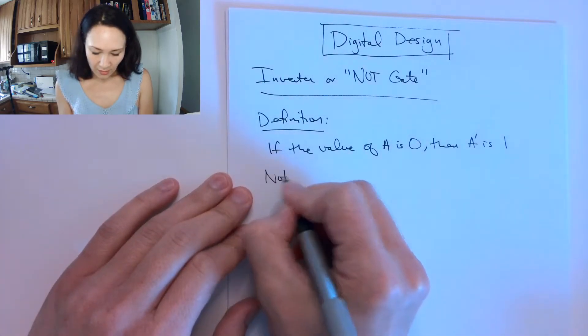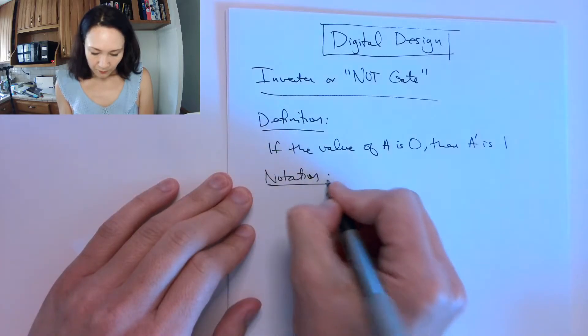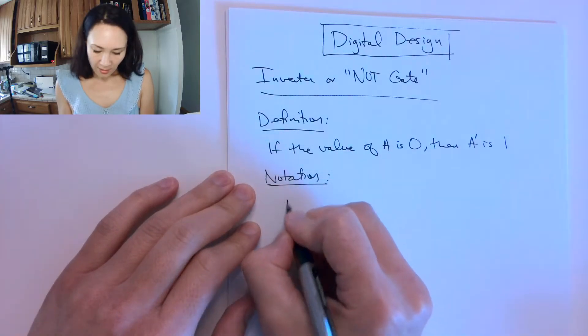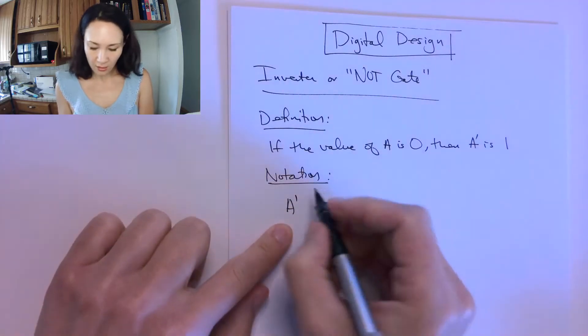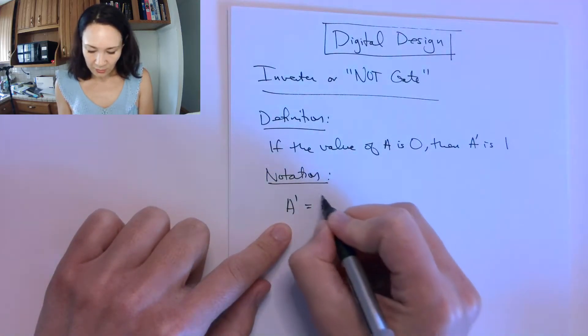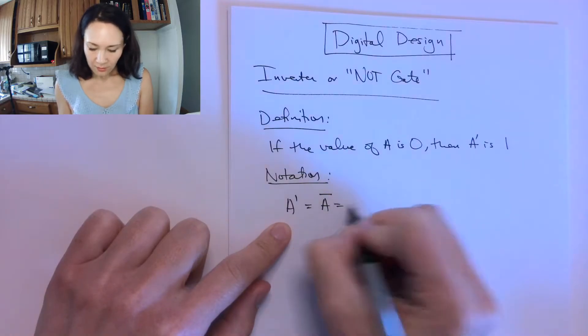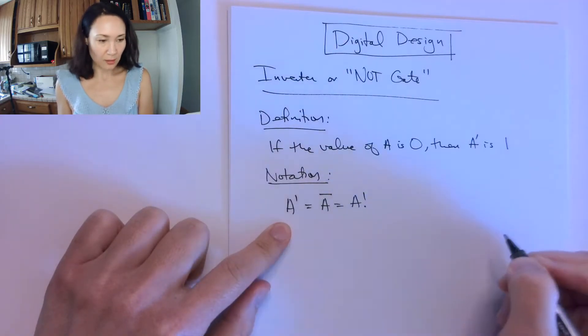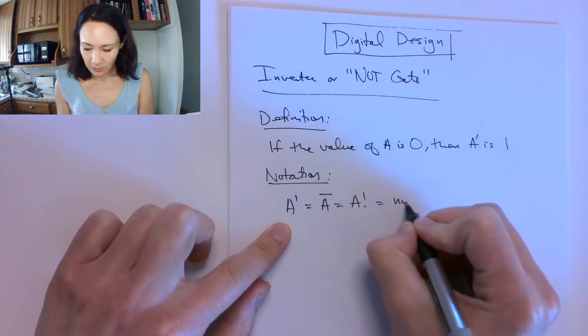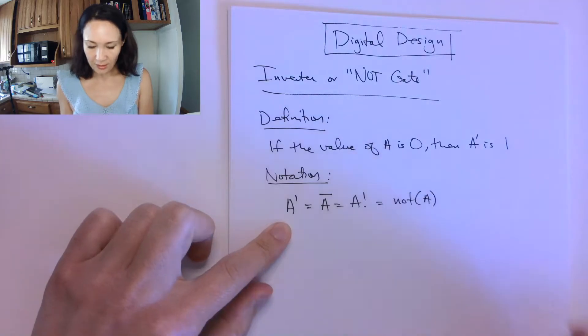And as far as notation, you might see that a little tick right there for A', or sometimes you'll see a bar on top, sometimes you'll see an exclamation point, and sometimes you'll see it in function notation like this, NOT(A).